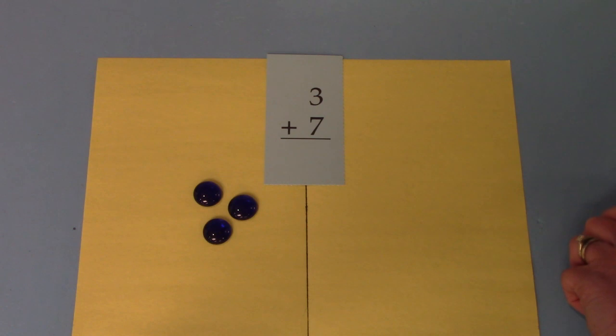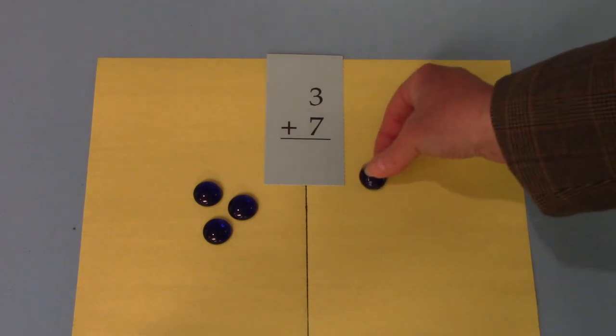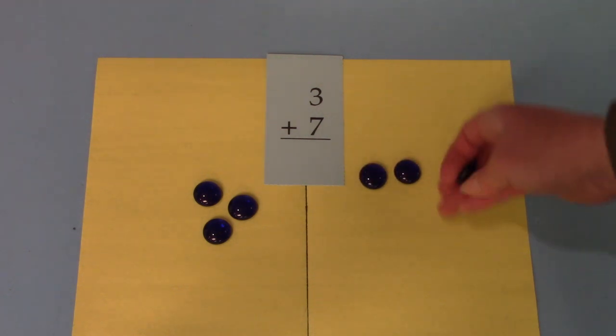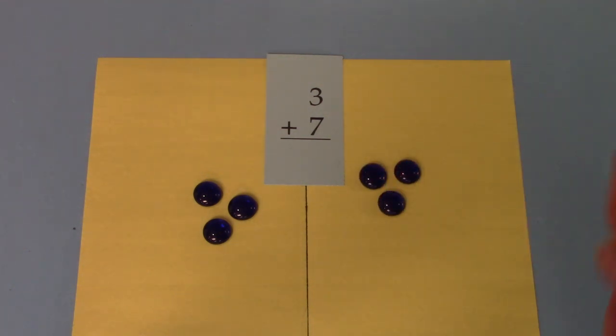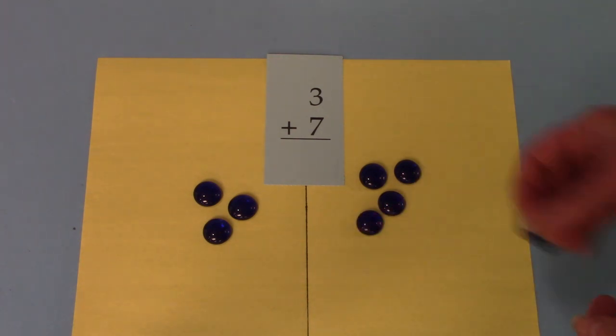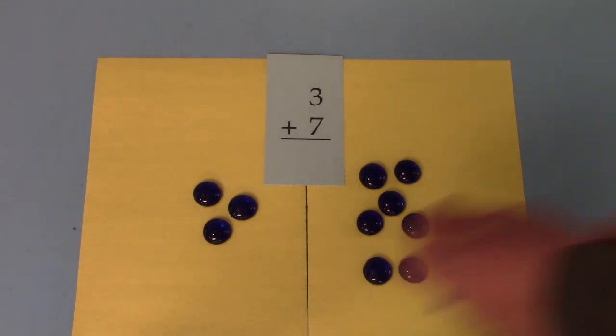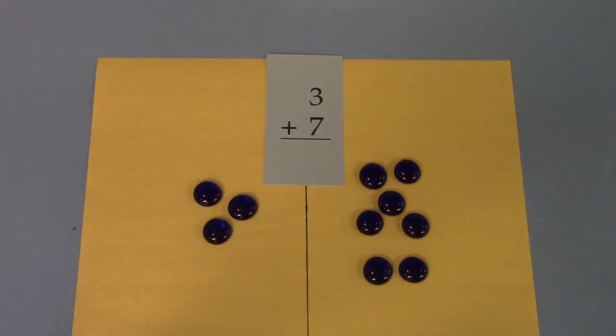For three plus seven I am going to put three on one side. And how many do you think I'm going to put on the other side? That's right. I'm going to put seven. One, two, three, four, five, six, seven. I have three plus seven. Does that give me ten all together? Let's count.